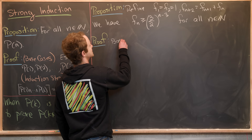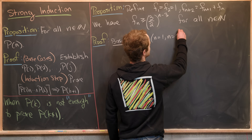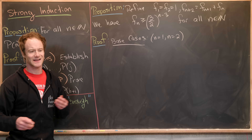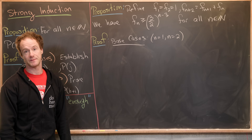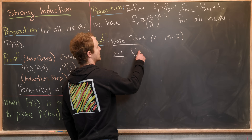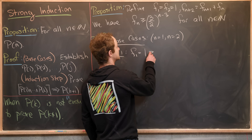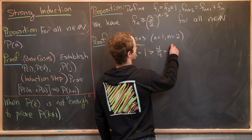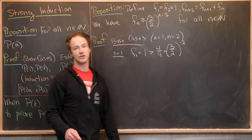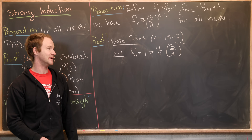Let's prove our base cases first. The base cases are n=1 and n=2, motivated by the two-step recursion. For n=1: f_1 = 1, and 1 > 4/9, which equals (3/2)^{-2} = (3/2)^{1-3}. That establishes the first base case.